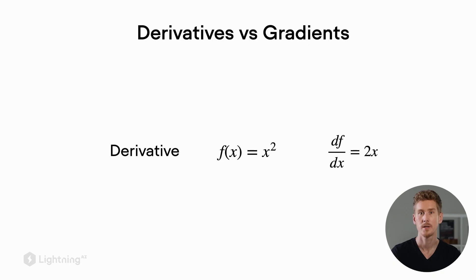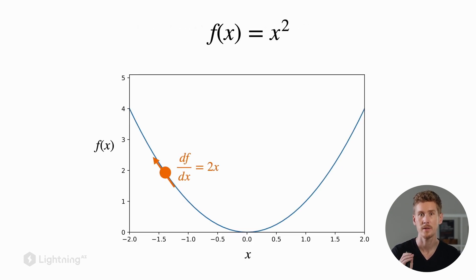Now how are derivatives related to gradients? So consider this function f(x) equals x squared. If we compute the derivative of this function with respect to x the result is 2x. So if I would plot this quadratic function the derivative would be the slope at a given point.